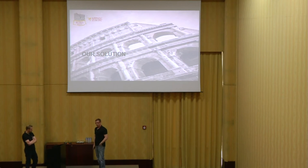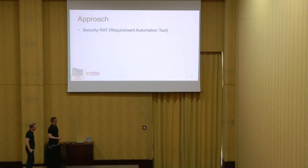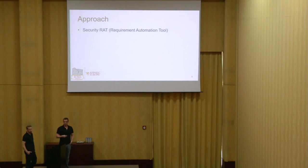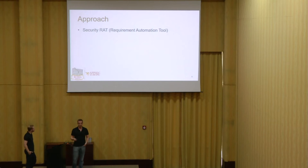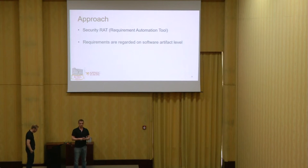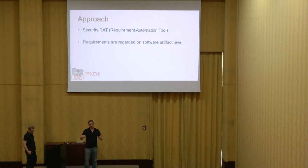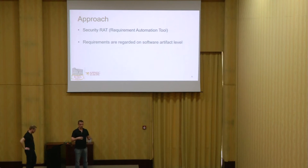What we are trying to implement our idea with is a tool we call Security RAT — Security R-A-T for Requirement Automation Tool. What we do with requirements is we observe them on an artifact level. An artifact for us is usually something deployable, but sometimes it can also be a library which gets shared among more applications. This works quite well with more agile methodologies.